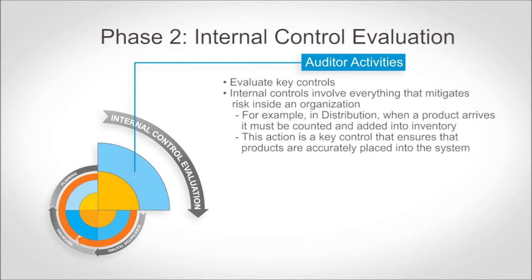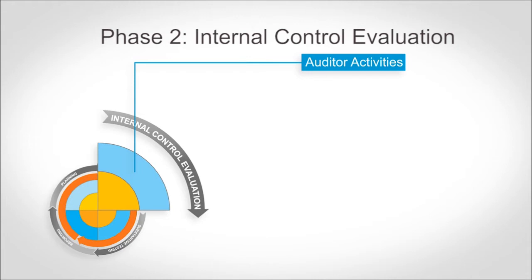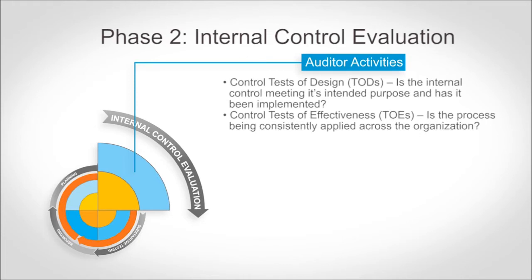When an auditor tests controls, they are looking at the frequency that this process occurs, not the actual quantity of product recorded. Controls are evaluated using two types of tests: tests of design (TODs) and tests of effectiveness (TOEs). When conducting tests of design, auditors investigate whether the internal control in place to mitigate risk is operating as intended and whether it has been implemented.